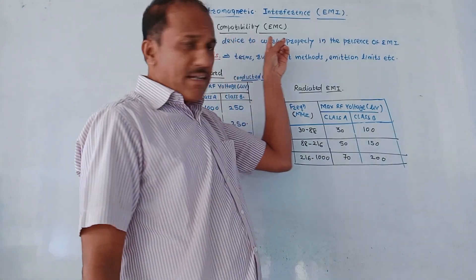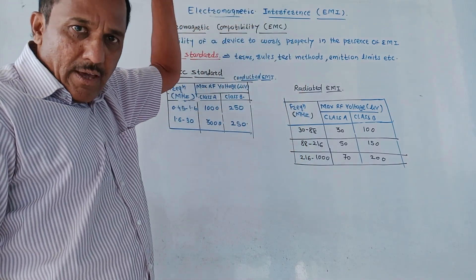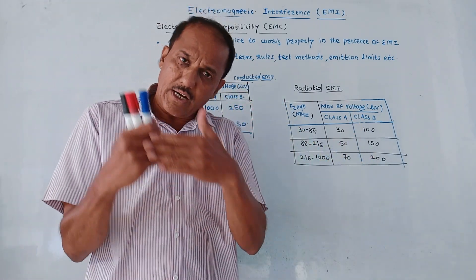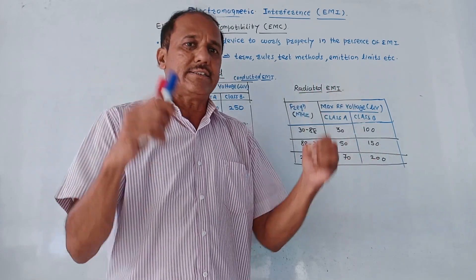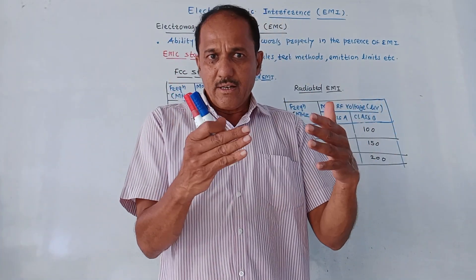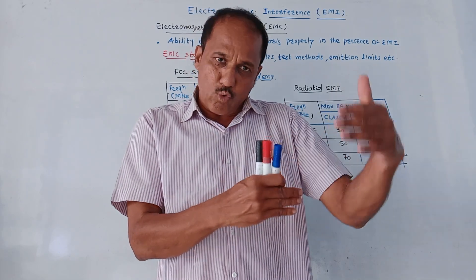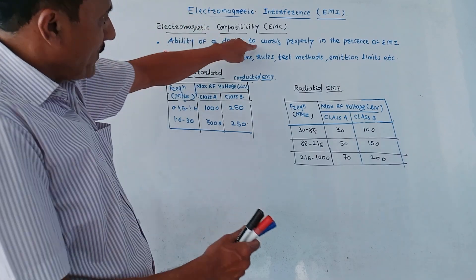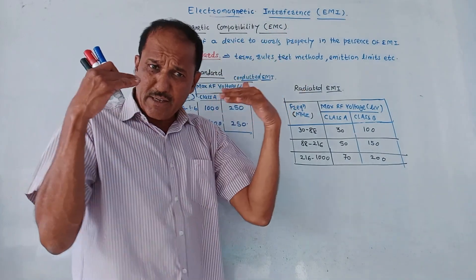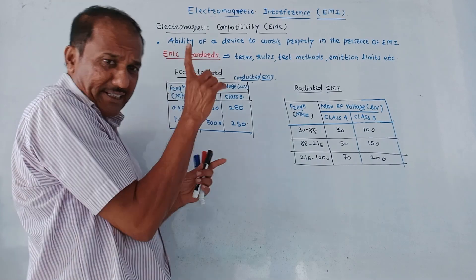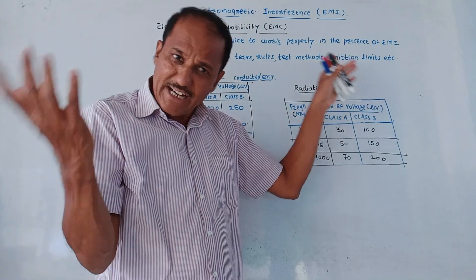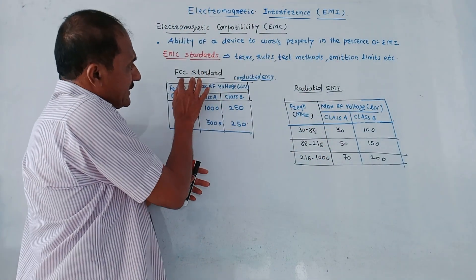Next is EMC, that is electromagnetic compatibility. As the name indicates, it is the ability of a device to work properly under the influence of EMI — that is electromagnetic interference. So it is the ability of a device to work properly in the presence of EMI. This term is called EMC. There are different EMC standards, which basically decide the terms and conditions, rules, test methods, emission limits, and so on. One of the EMC standards is the FCC standard.